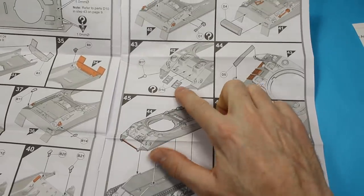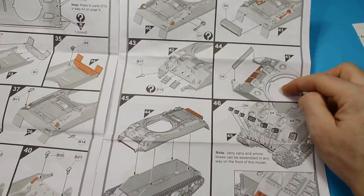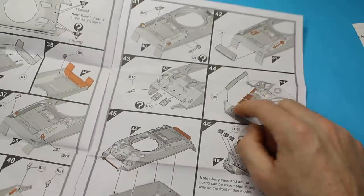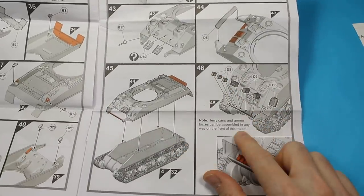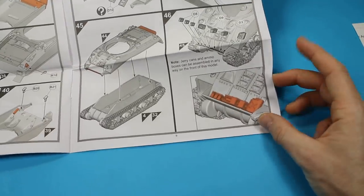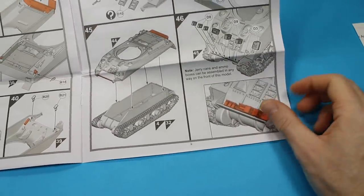So you add the tools on, and we've got the spare tracks at the front, and then we've got the board that goes on for holding the stowage on the front of the hull, and then we've got a load of jerry cans and ammo boxes that can go along the front there.